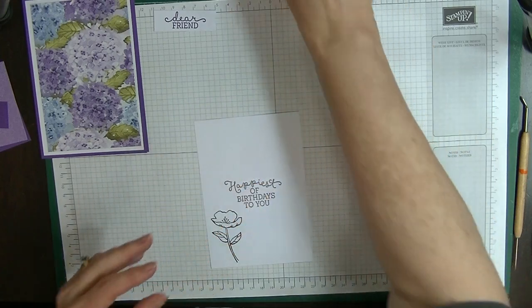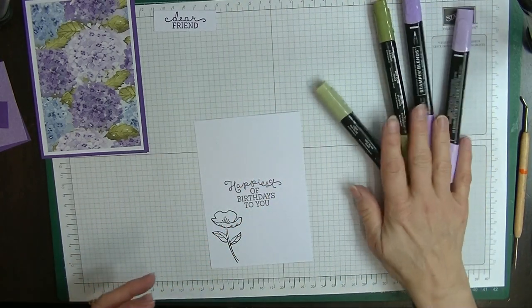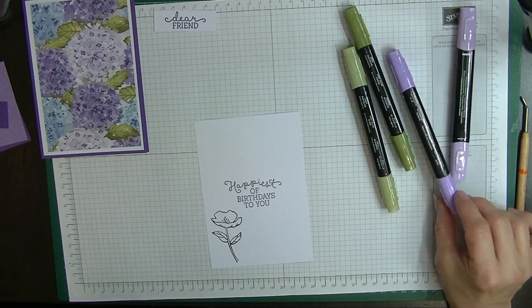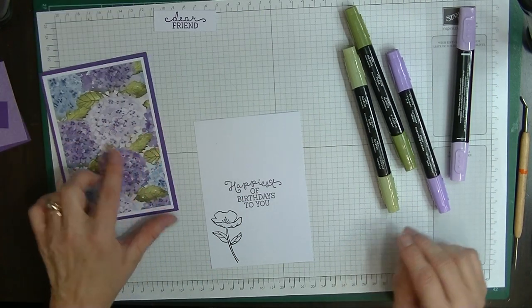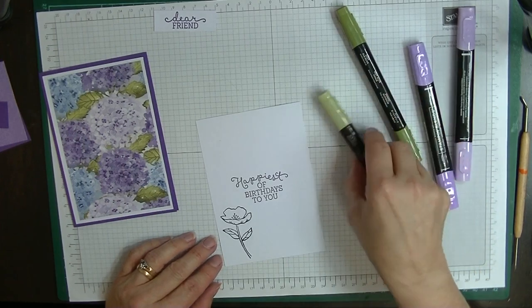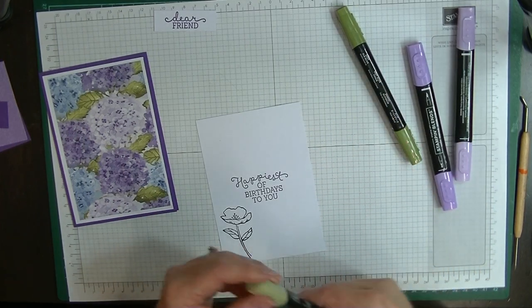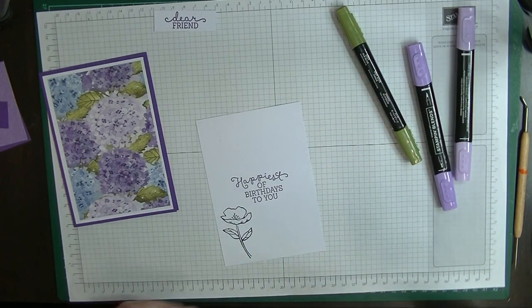Now I'm just going to use my blender pens. I've got my blenders, I've got Old Olive and I have Highland Heather. Because these colors in this are Gorgeous Grape and Highland Heather. I'm going to do my leaves and stem.